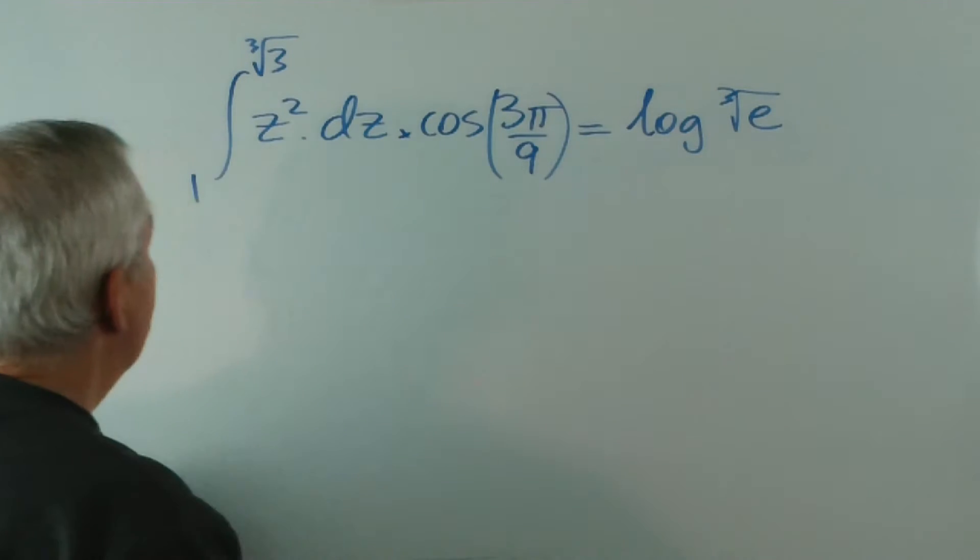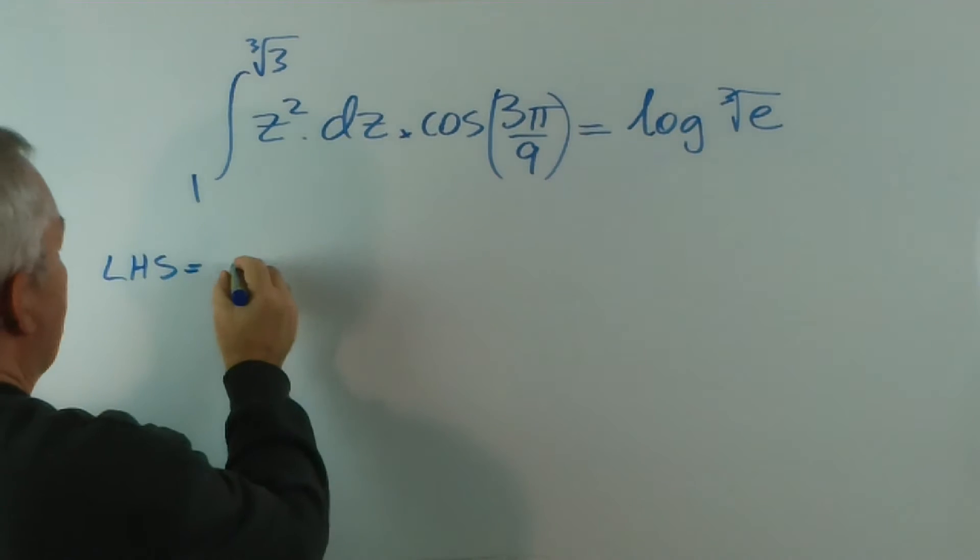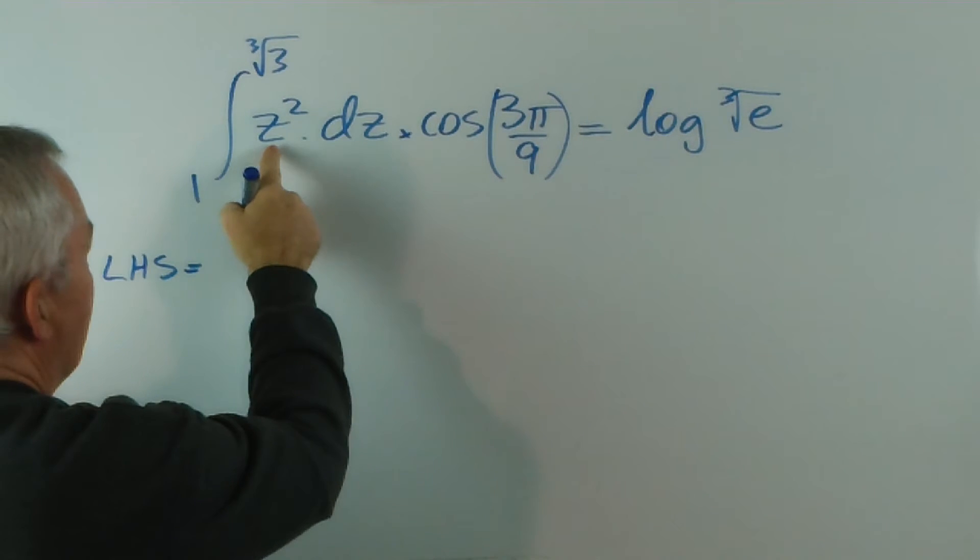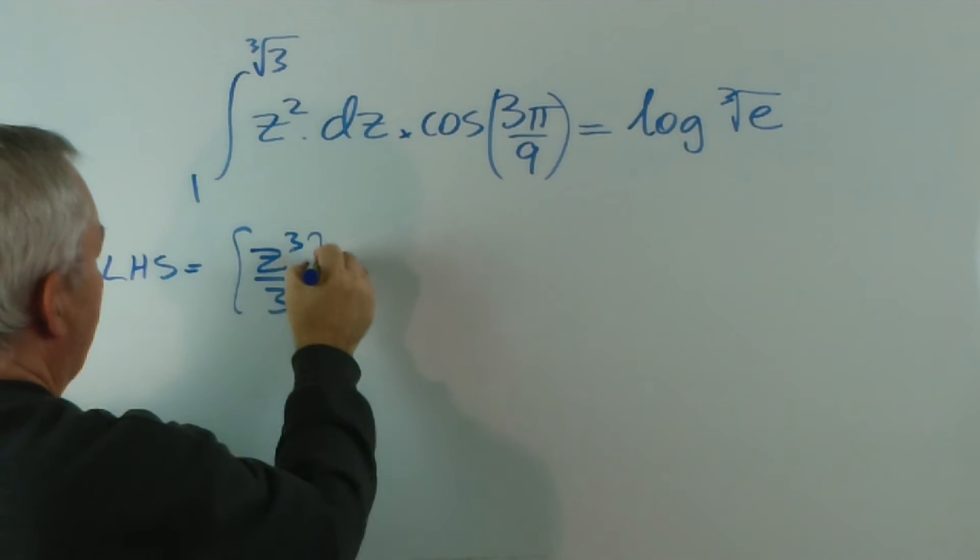Well, here we go. The left-hand side is this. The integral of z squared is z cubed on 3 and 1.